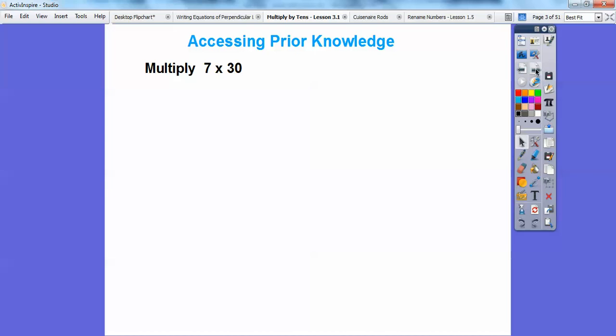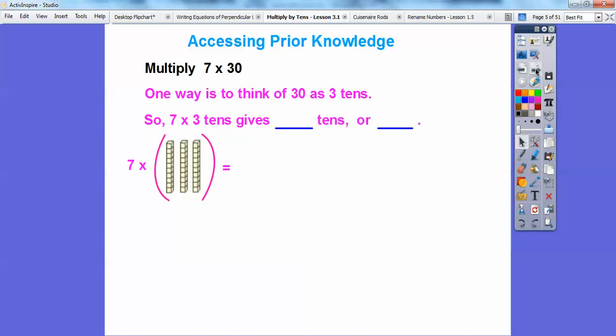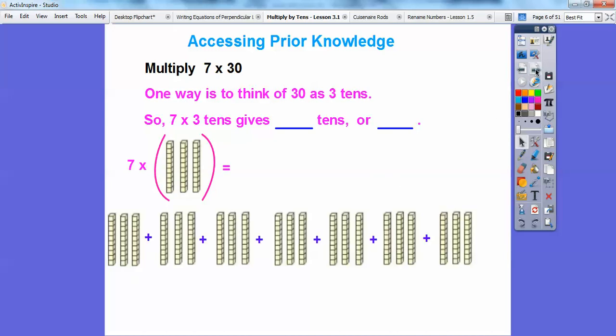Let's access some prior knowledge here. 7 times 30, you can think of 30 as 3 tens. So we can do 7 times 3 tens. So here's 3 longs right here. 7 of these, 7 groups of these. If I did 7 of those it would get me that right there. So there is 7 times 3 tens. So how many tens is that? There's 21 tens. And if we counted all those up there would be 21. 7 times 3 is 21. So 21 tens gives us how much? It gives us 210.